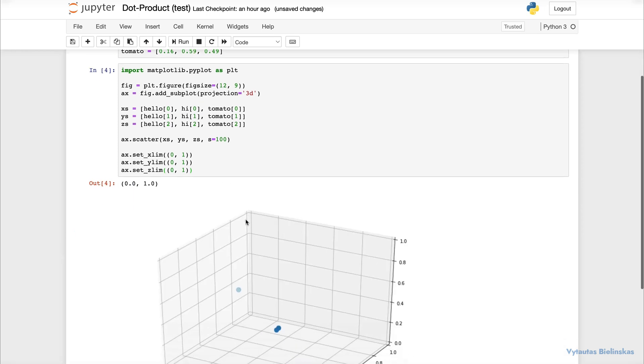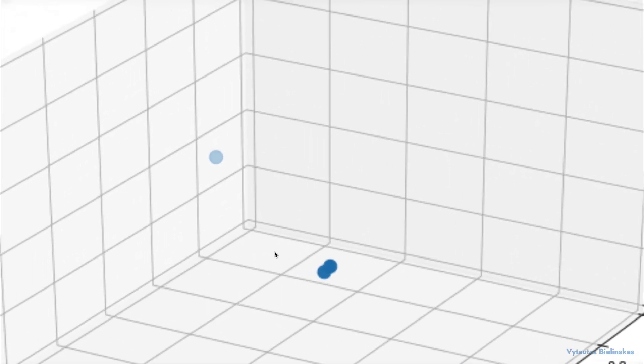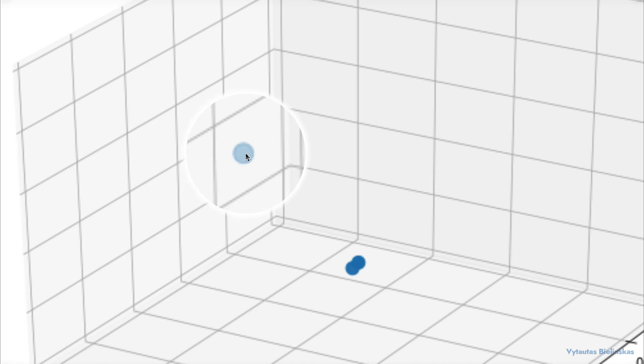So now when we look at this, we can see our 3D plot and these two vectors here. These are hi and hello. And over here we have tomato.